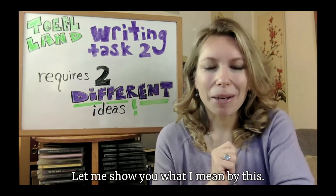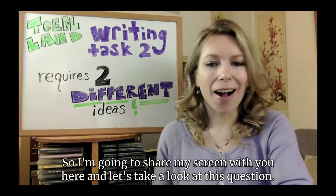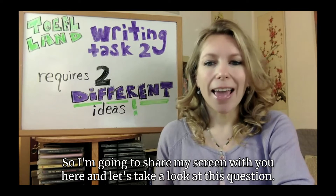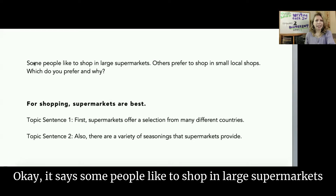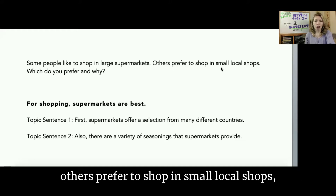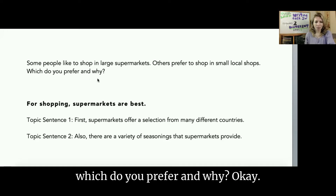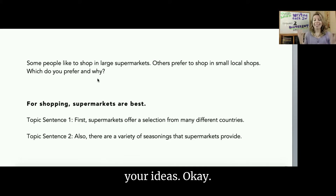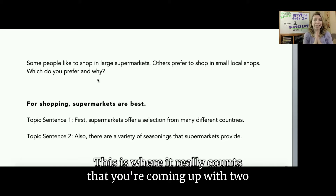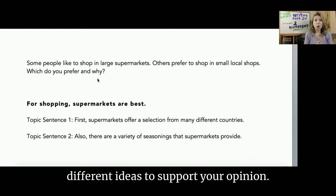Let me show you what I mean by this. I'm going to share my screen with you here and let's take a look at this question. It says: some people like to shop in large supermarkets. Others prefer to shop in small local shops. Which do you prefer and why? So the first thing that you want to do is write down on a piece of paper your ideas. This is where it really counts that you're coming up with two different ideas to support your opinion.